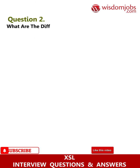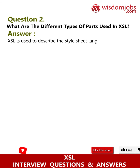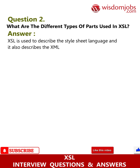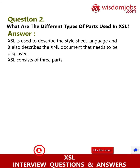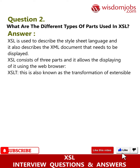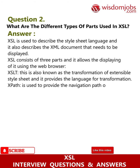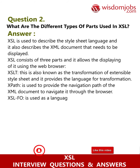Question 2: What are the different types of parts used in XSL? XSL is used to describe the style sheet language and the XML document that needs to be displayed. XSL consists of three parts: XSLT, also known as the transformation of Extensible Style Sheet, which provides the language for transformation; XPath, which provides navigation of the XML document through the browser; and XSL-FO, used as a language for the transformation of XML documents.